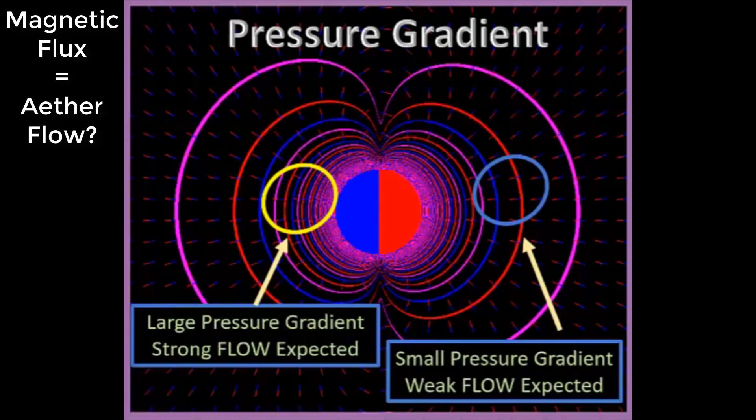Likewise for a magnet, large pressure gradients have closer isopotential lines and strong flow is expected. Small pressure gradients have more spread out isopotential lines and weak flow is expected. Magnetic flux equals ether flow question mark.